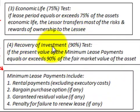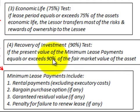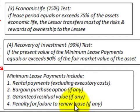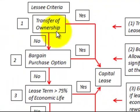Number four, the recovery of investment or 90% test: the present value of the minimum lease payments equals or exceeds 90% of the fair market value of the assets. The minimum lease payments include: rental payments excluding any executory costs, a bargain purchase option if any, a guaranteed residual value if any, and a penalty for failure of renewal of the lease if any. That completes the better-defined test criteria for the lessee.